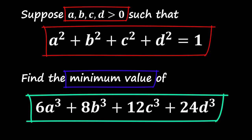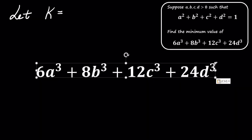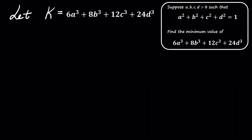To solve this, we will use the Cauchy-Schwarz inequality. Let's define k as 6a cubed plus 8b cubed plus 12c cubed plus 24d cubed. We want to find the minimum value of k, so we'll apply the Cauchy-Schwarz inequality.